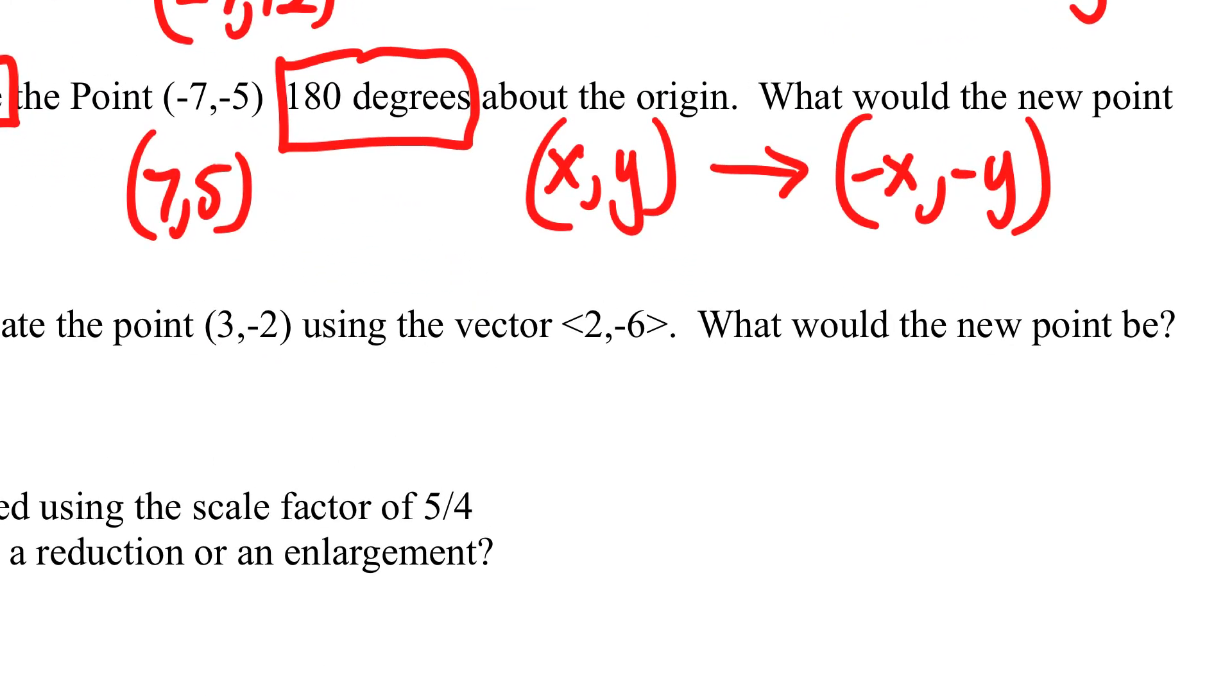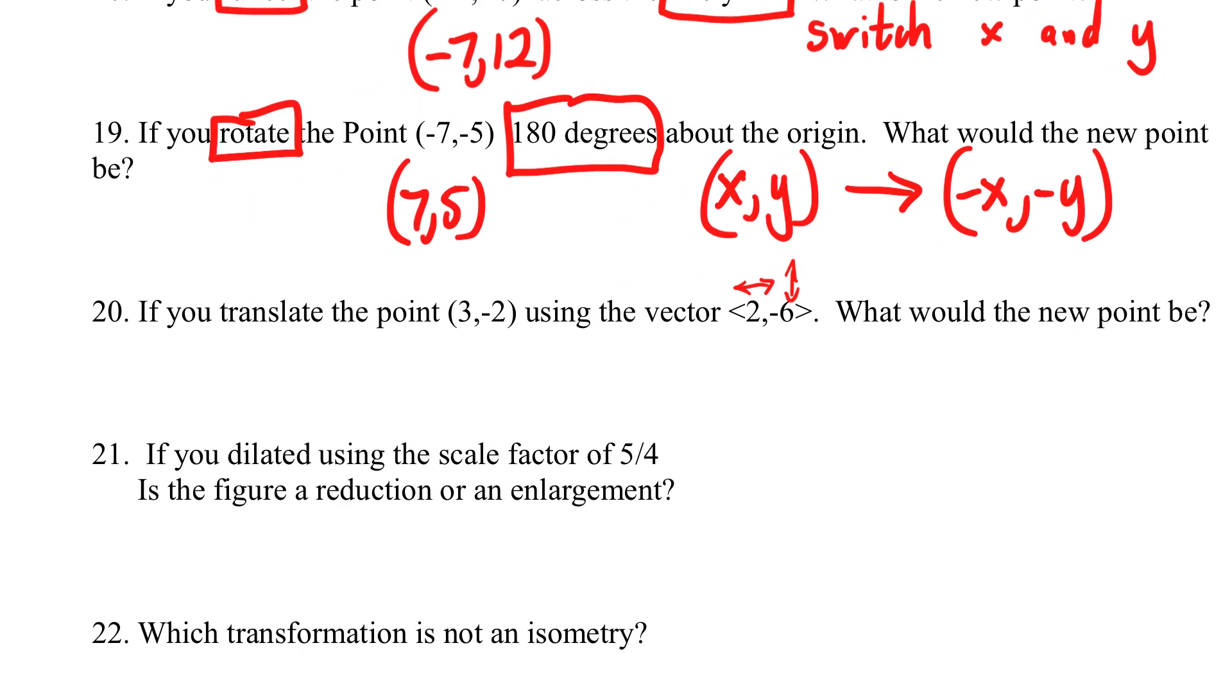Okay, so remember in the vector, what does the first number tell us? If you go left to right. Left to right. The second number tells us up, down. Okay? So if you're at three, negative two, and you translate using the vector two, negative six. Okay, what is three plus two? Five. Five. And what's negative two minus six? Negative eight. Negative eight. Negative eight.